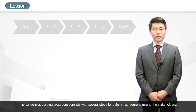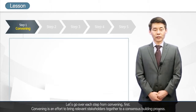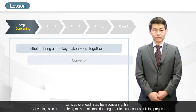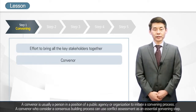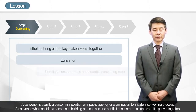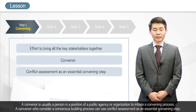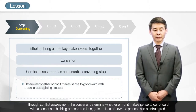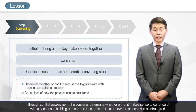The consensus-building procedure consists of several steps to foster an agreement among the stakeholders. The first step is convening — an effort to bring relevant stakeholders together to a consensus-building process. A convener is usually a person in a position of a public agency or organization to initiate a convening process. A convener considering a consensus-building process can use conflict assessment as an essential convening step to determine whether it makes sense to go forward and how the process can be structured.